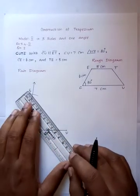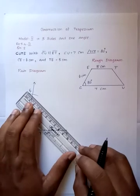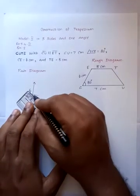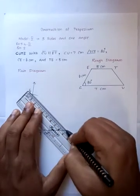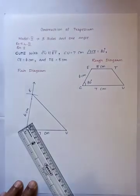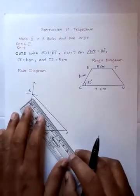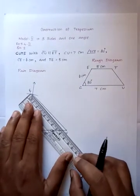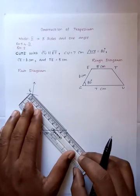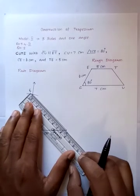Triangle part complete. We will join E and U. This is the diagonal of trapezium. We will drop the diagonal value. Diagonal value measure 8.4 centimeter.